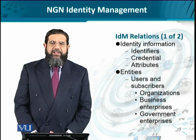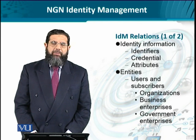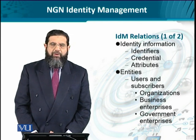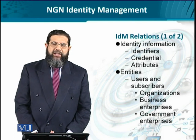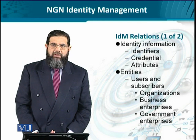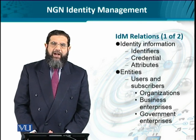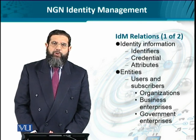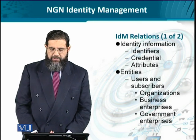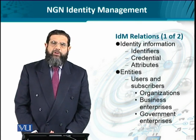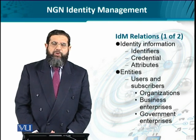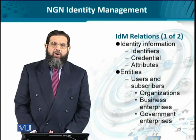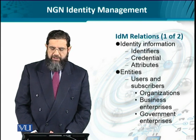The identity information is essentially from multiple angles and dimensions — the identifiers or IDs themselves, their credentials, and their attributes. All these identities and their aspects actually refer to the entities involved in the network. The most important entity is the user that has a certain subscription, meaning a user can be a network user or a subscriber to a certain service.